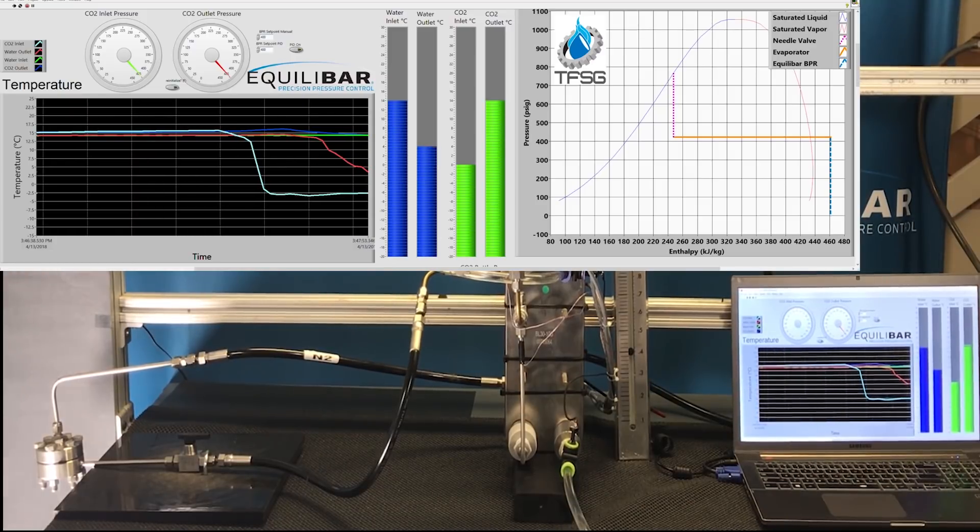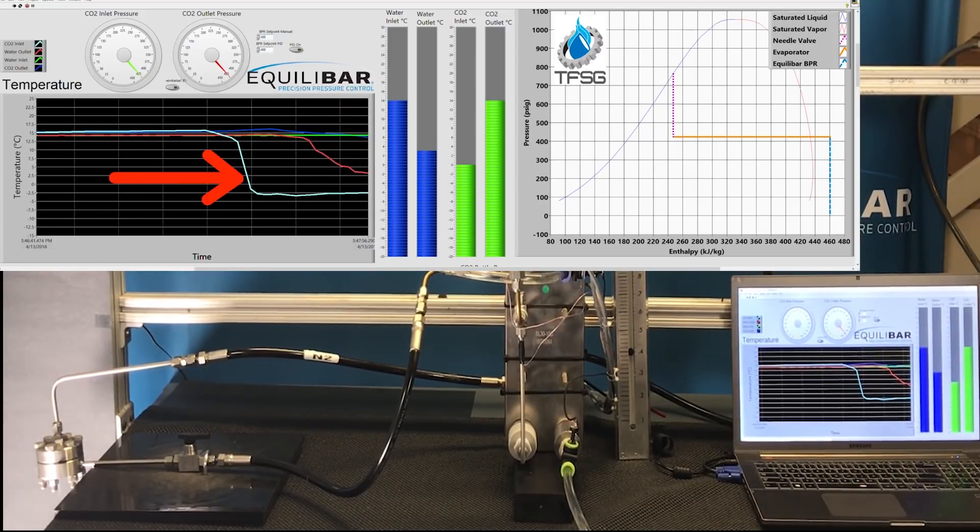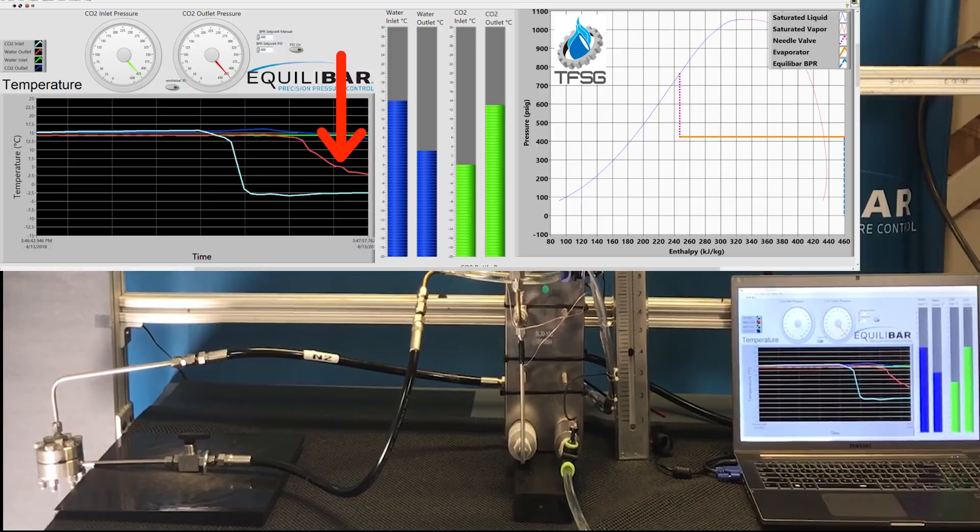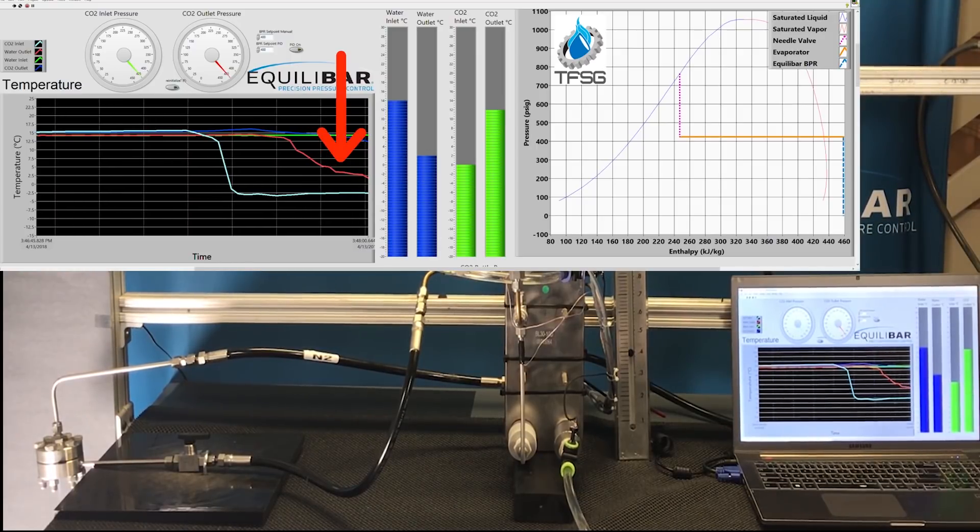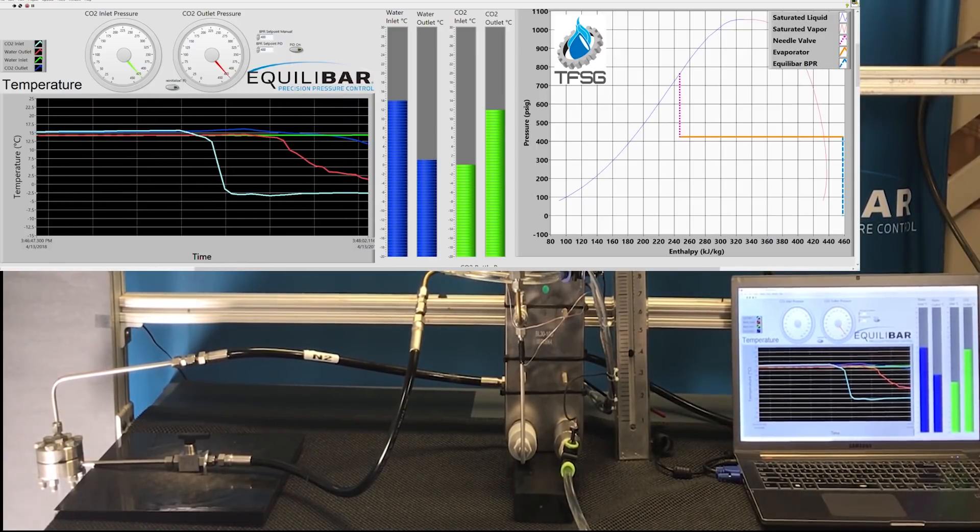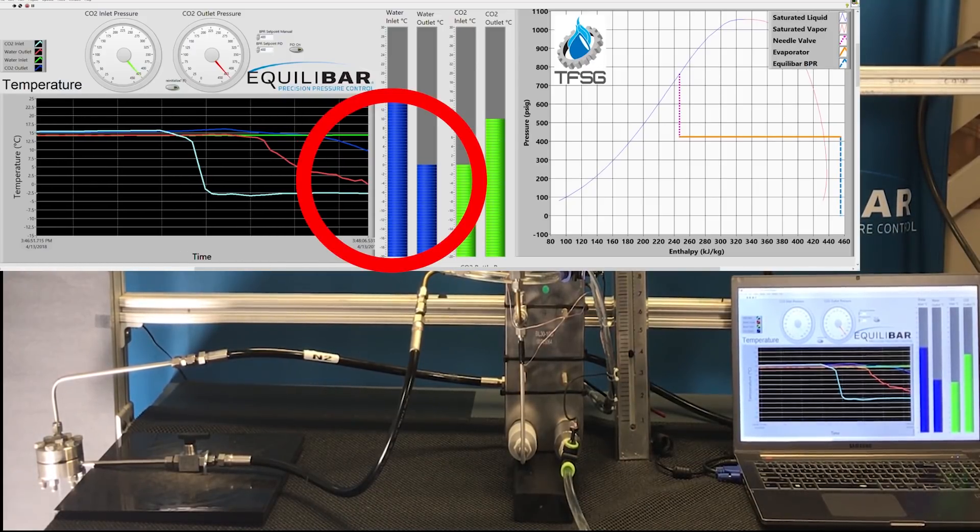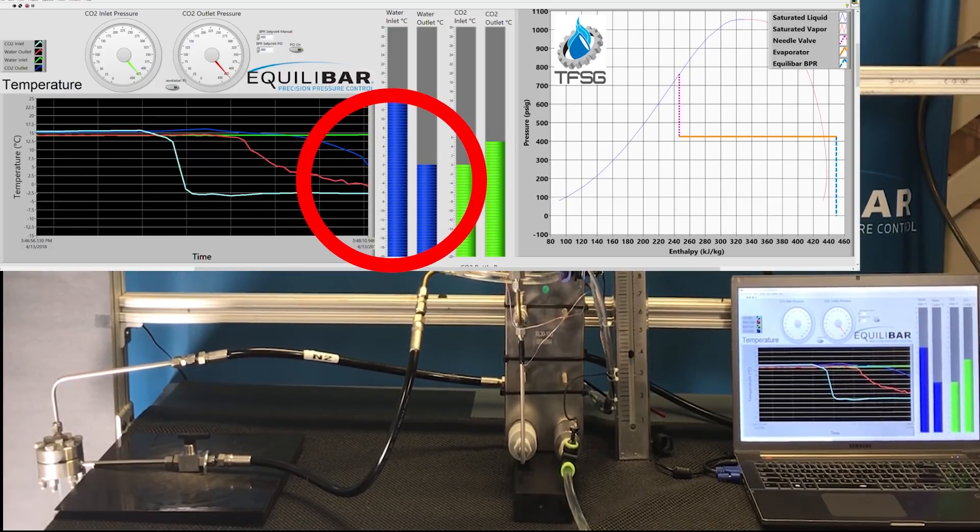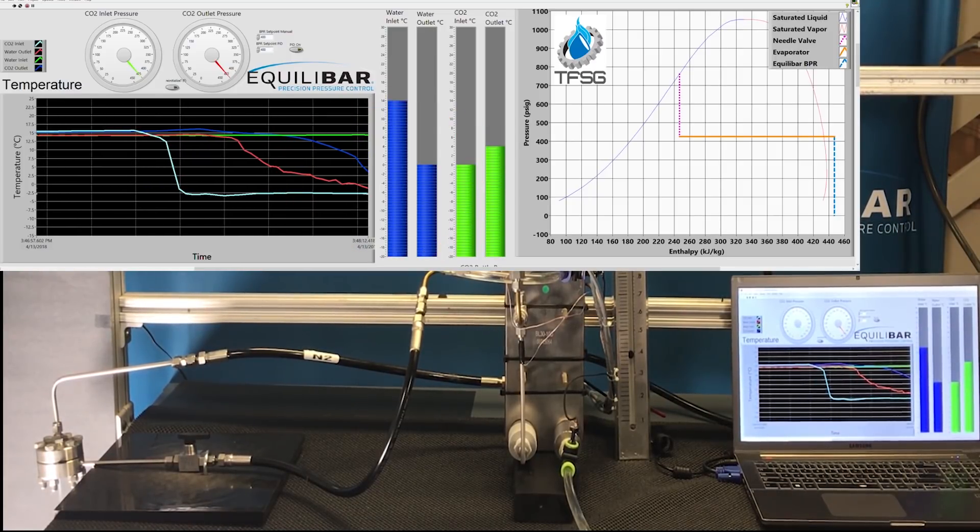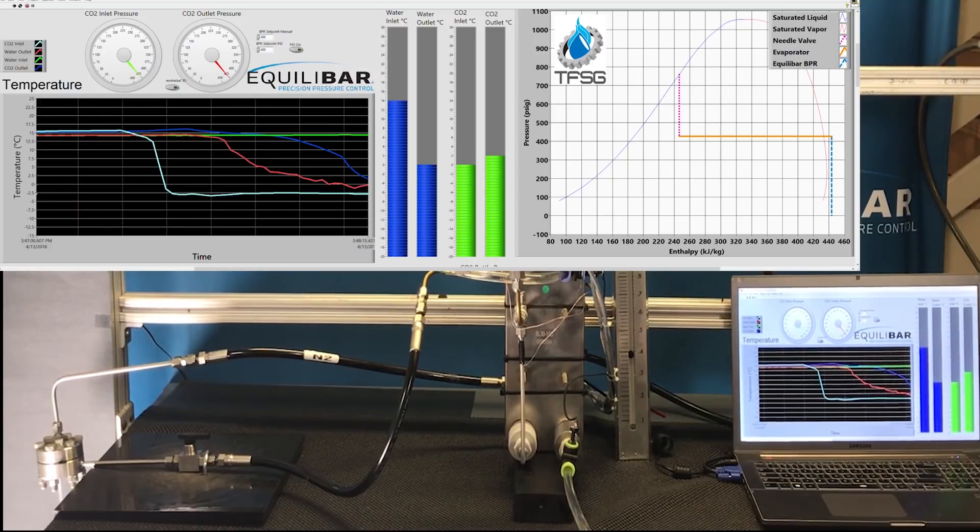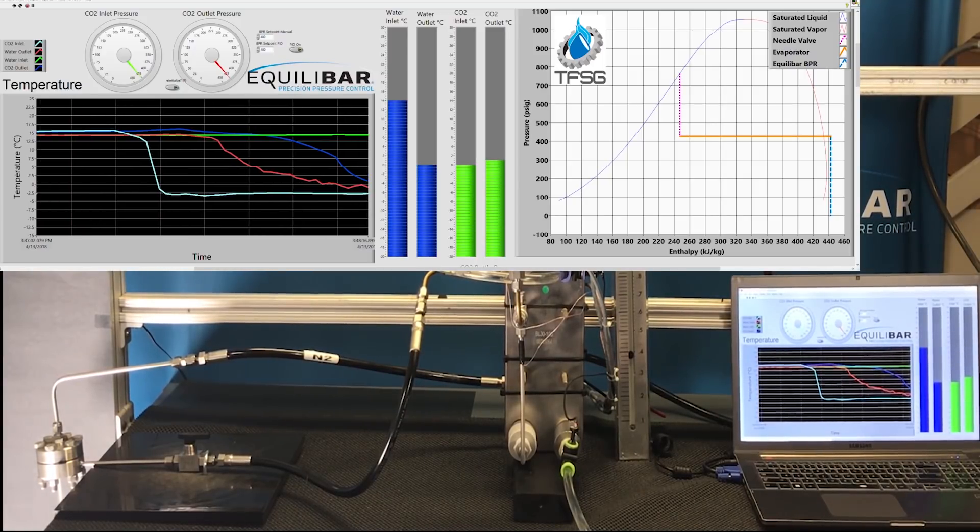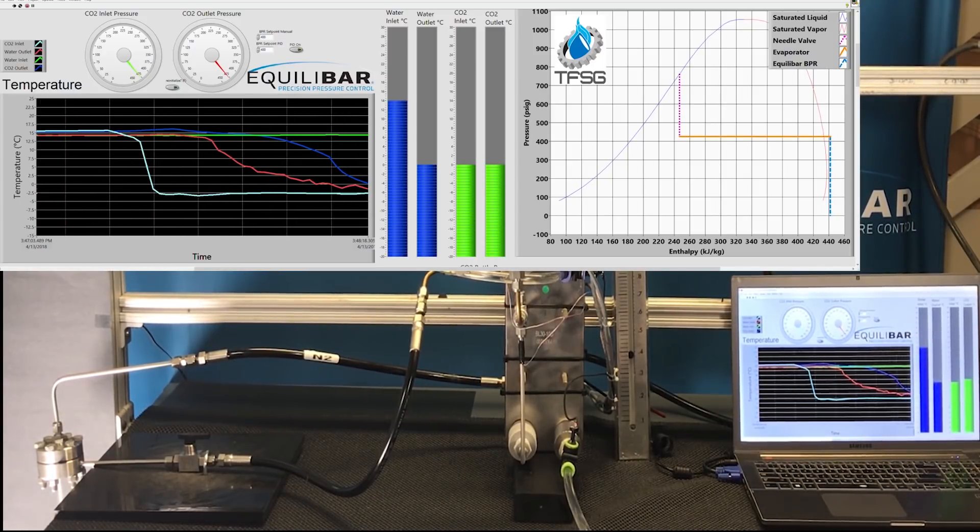To reiterate, the light blue line is the CO2 inlet temperature and the red line is the heat load outlet temperature. As the heat transfer process reduces heat load outlet temperature, convergence of these two lines will conclude isothermality. Equilibar's blockage resistant regulator design prevents the solid particles from plugging and allows them to exit without disturbing the pressure control. We can see this on the left side of the screen.